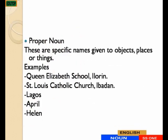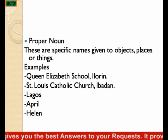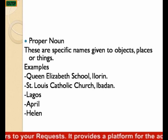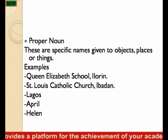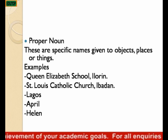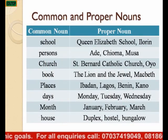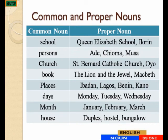The next one we consider is the proper noun. Proper nouns are specific names given to objects, places, or things. Examples: Queen Elizabeth's School Ilorin, St. Louis Catholic Church Ibadan. The first example represents the name of a particular school. St. Louis Catholic Church is the name of a particular church. Lagos is the name of a particular city. April is the name of a particular month. Now let's see the difference between common noun and proper noun. School is a general name for places where people learn — that is a common noun, while Queen Elizabeth's School Ilorin is the specific proper noun equivalent.